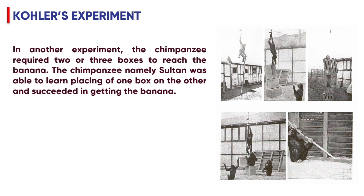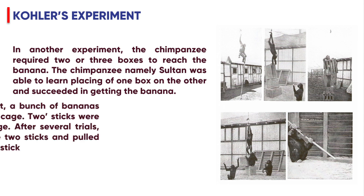In another experiment, the chimpanzee required two or three boxes to reach the banana. The chimpanzee, namely Sultan, was able to learn to place one box on top of the other and succeeded in getting the banana.